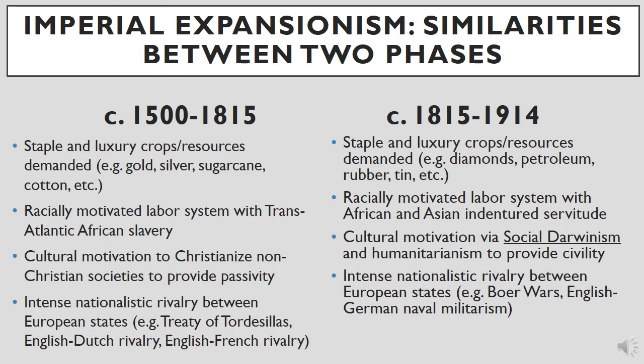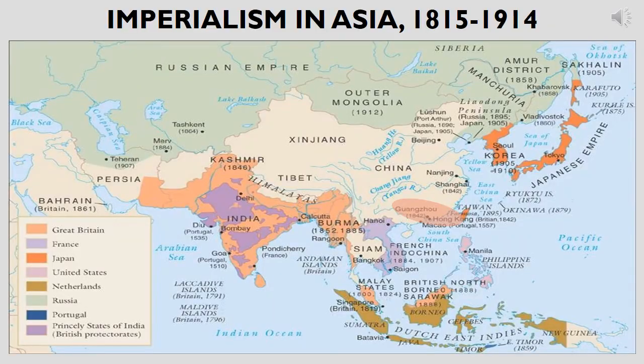Finally, in both phases, nationalistic rivalry was a common characteristic, as imperialistic states frequently competed with each other over a greater share of resources and profits from underdeveloped distant lands. The next several slides present the locations in the Eastern Hemisphere most targeted by imperialistic nations during the age of imperialism throughout the 19th and early 20th centuries. This specific slide shows the increase in European imperialism throughout Asia.